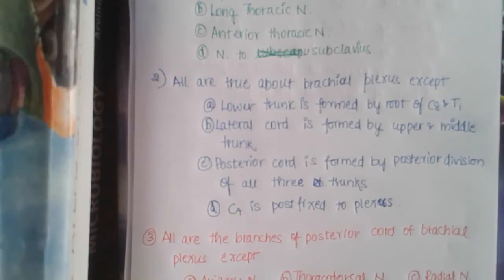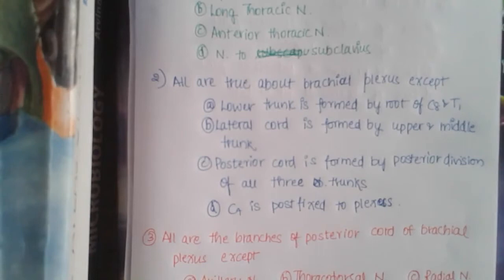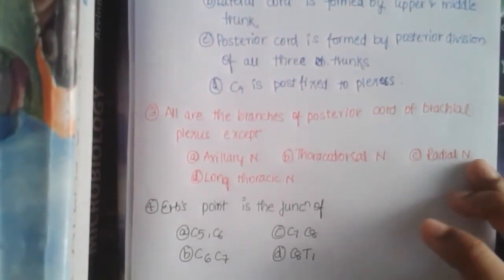— (a) lower trunk is formed by roots of C8 and T1, (b) lateral cord is formed by upper and middle trunk, (c) posterior cord is formed by posterior division of all three trunks, (d) C4 is post-fixed to the plexus. The third question is: what are the branches of the posterior cord of brachial plexus? All of the following are branches of posterior cord except —